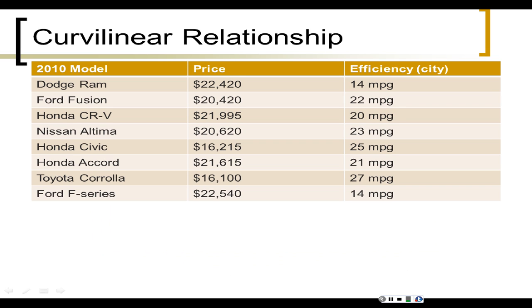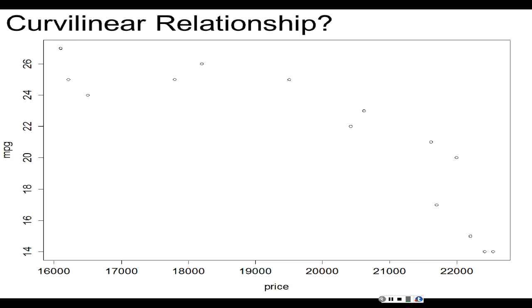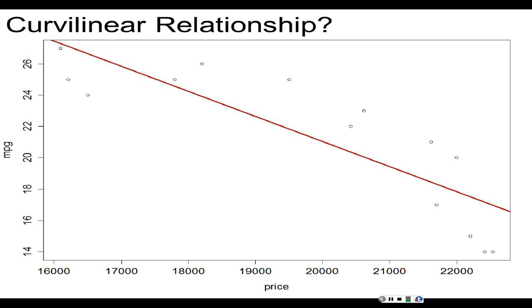Here's another example of a curvilinear relationship: the car data with price and fuel efficiency in miles per gallon. If we fit a straight line — which is just standard regression — we find a reasonably strong association. R is negative 0.85. That is a very strong correlation. But it's still not giving us the best model of the association between price and miles per gallon.